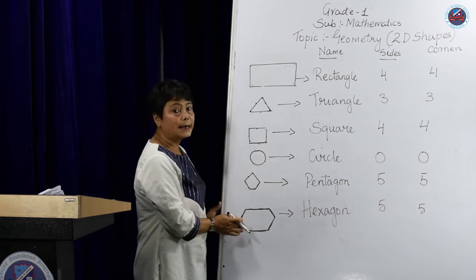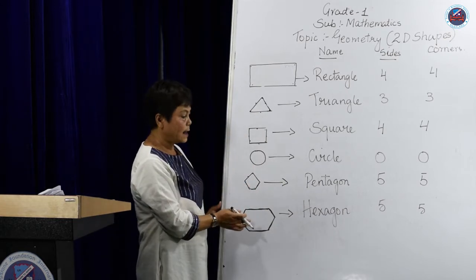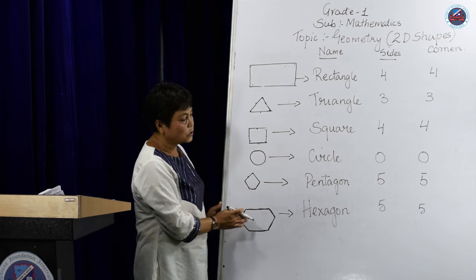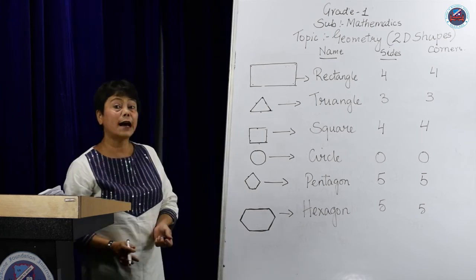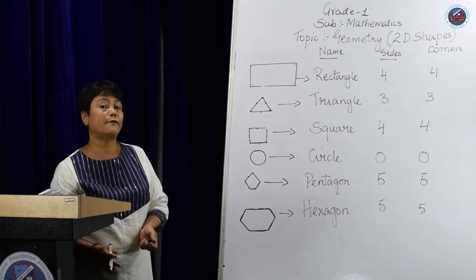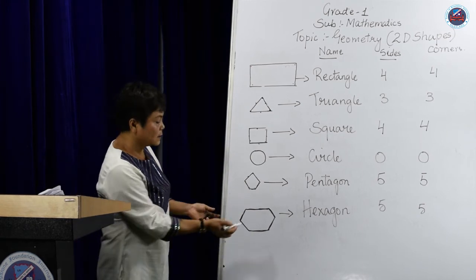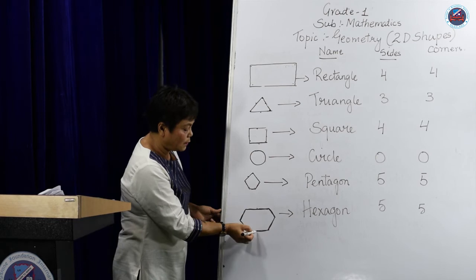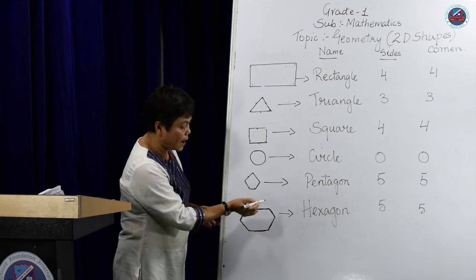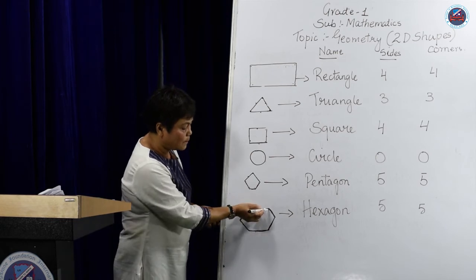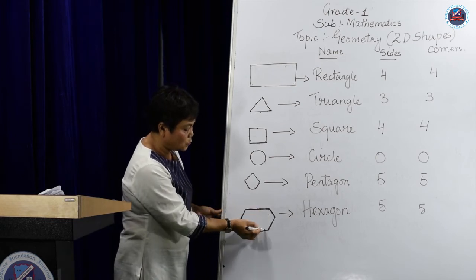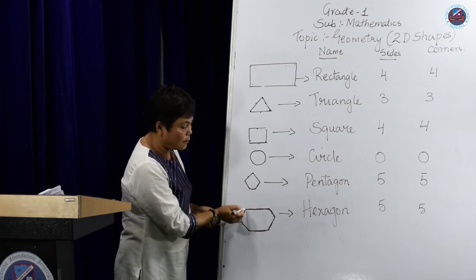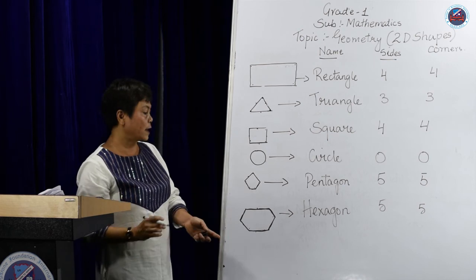Now, this is hexagon. Hexagon also have got five sides and five corners: one, two, three, four, five, and corners: one, two, three, four, five.